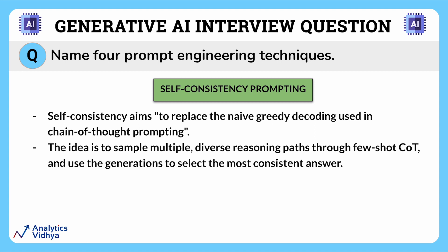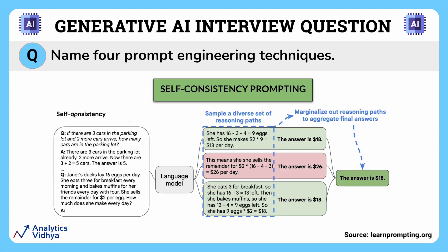Self-consistency is a smarter way to do this. When you write each new sentence, you pay more attention to make sure it fits well with what you have written before — checking if your new sentence makes sense and matches the story's tone and style. Self-consistency involves providing the AI model with multiple reasoning paths or diverse perspectives, and then selecting the most consistent and coherent answer among the generated responses. This technique helps reduce biases in the AI's responses and encourages it to consider various viewpoints before arriving at a conclusion.